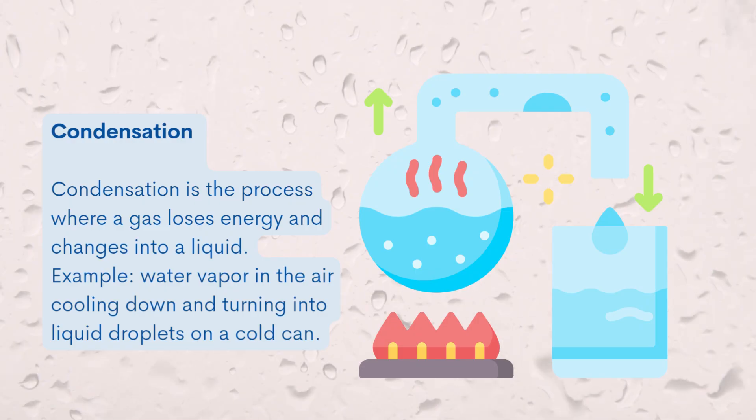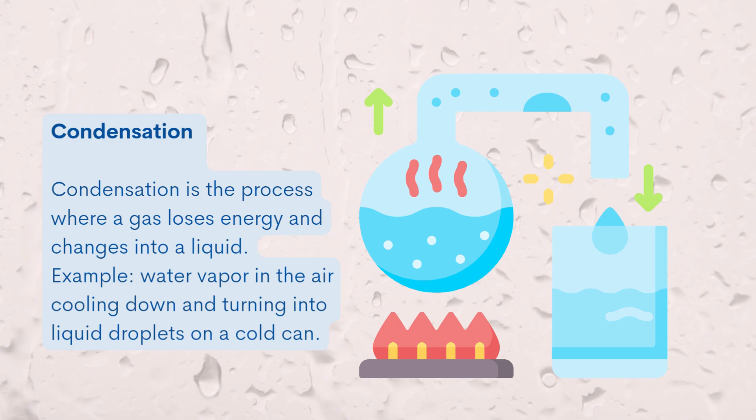Water vapor in the air lost energy when it touched the cold surface of the can. As the particles slowed down, they moved closer together and changed from a gas into a liquid. That's why we see liquid water forming on the outside of the can, an everyday example of how changes in particle energy can change the state of matter.